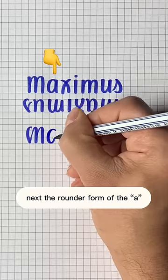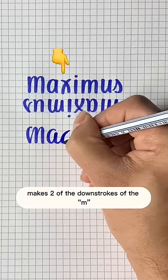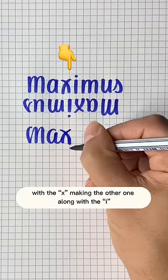Next, the rounder form of the A makes two of the downstrokes of the M, with the X making the other one along with the I.